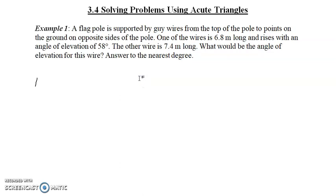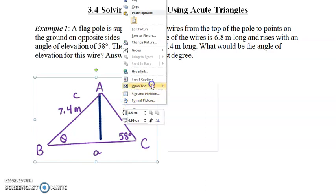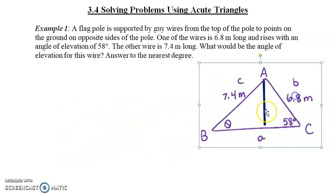This is a flagpole supported by guy wires from the top of the pole to points on the ground on opposite sides of the pole. One of the wires is 6.8 meters long and rises with an angle of elevation of 58 degrees. The other wire is 7.4 meters long. What would the angle of elevation be for this wire? So, draw a quick diagram.